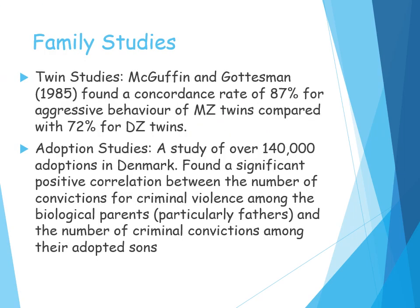One way we could look at the genetic element of aggression is to study families, and in particular look at twin studies and adoption studies. Monozygotic twins, or MZ twins, are identical twins — they share 100% of their genes and DNA — whereas dizygotic twins, DZ twins, share 50% of their genes. They are just siblings that are born at the same time.